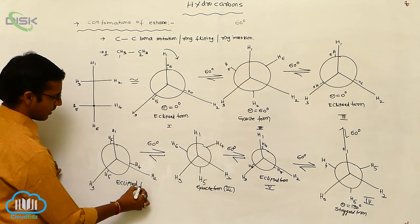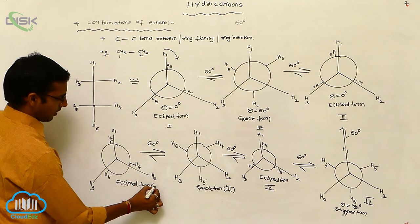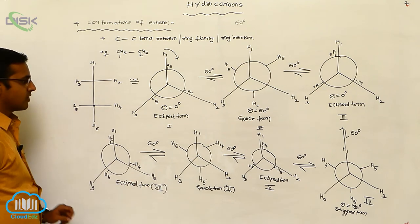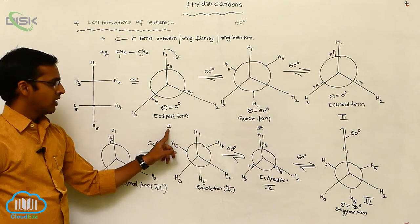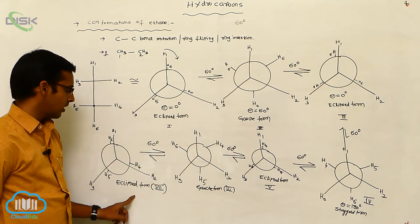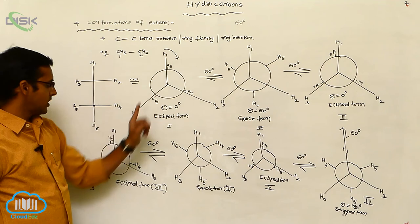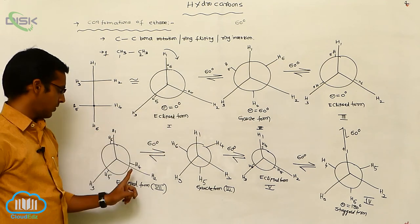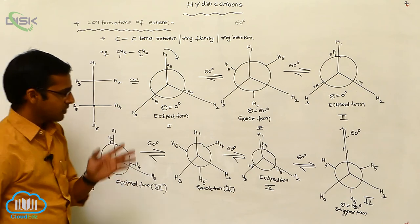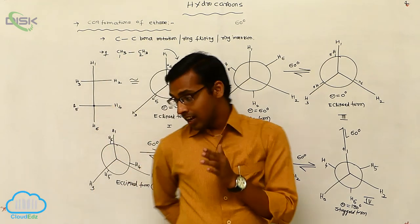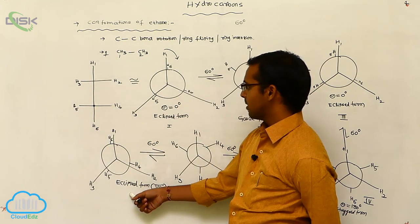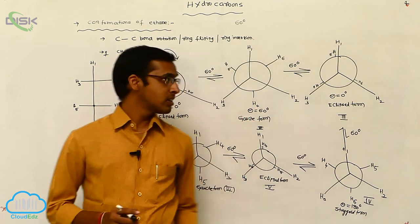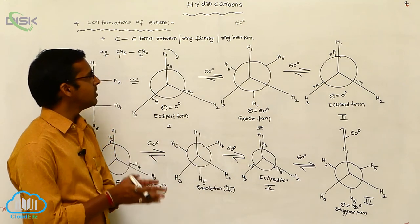The seventh structure and the first conformation form are both the same — h1 is eclipsed with h6, h2 with h4, and h3 with h5. The dihedral angle is 0 degrees in both. These are the conformation structures of ethane.